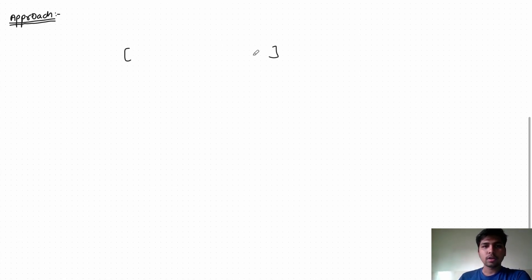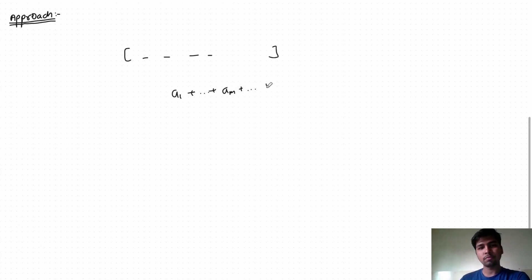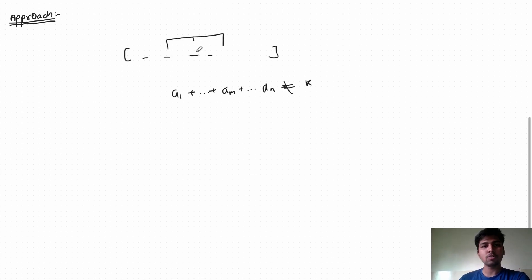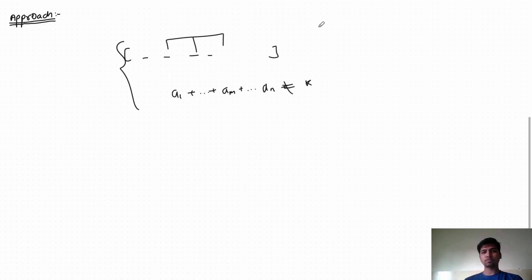Let's say we have an array with some elements a1, a2, ... am, ... an. The overall sum of any combination of elements should not be equal to k. For any combination we pick, the sum of those elements should not equal k. So how can we achieve this?